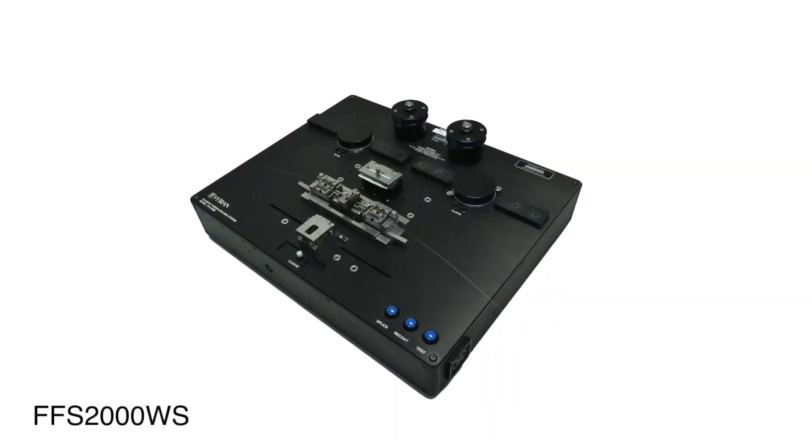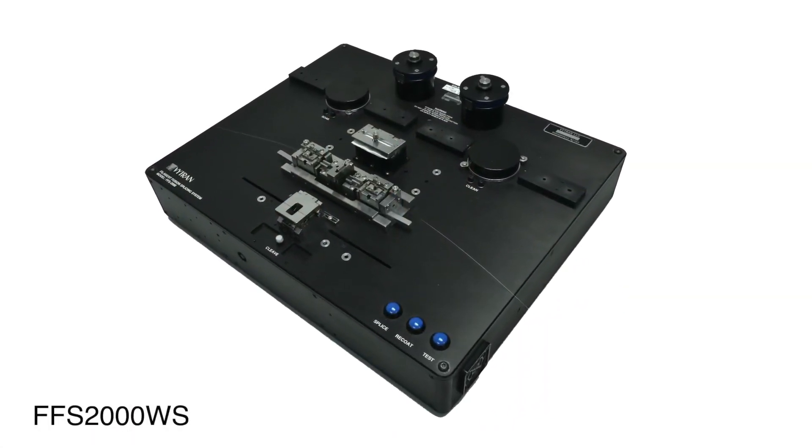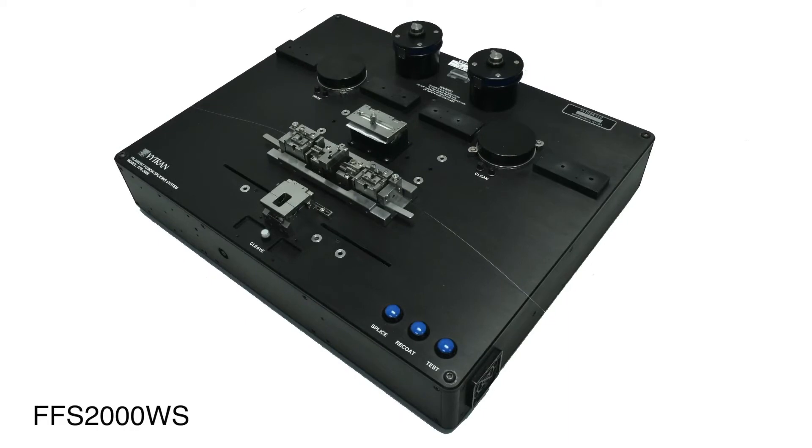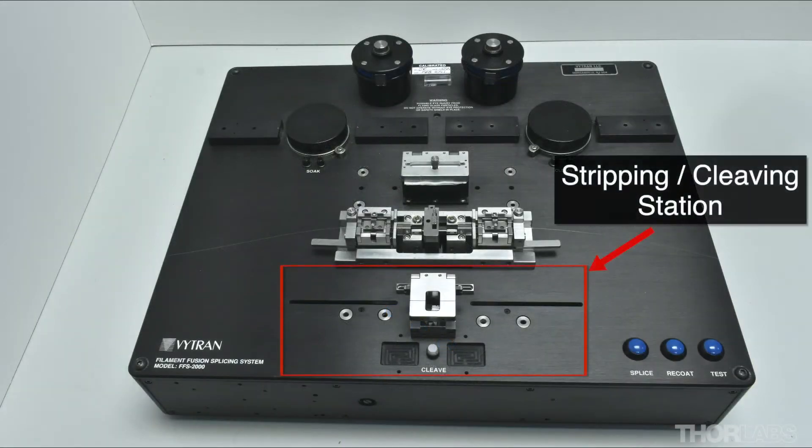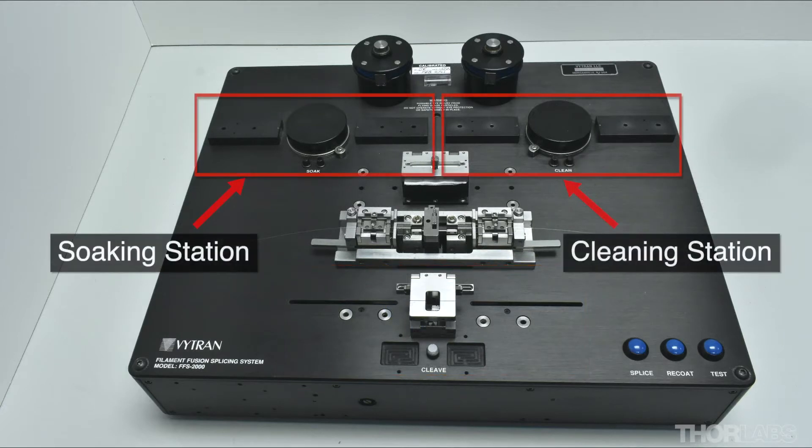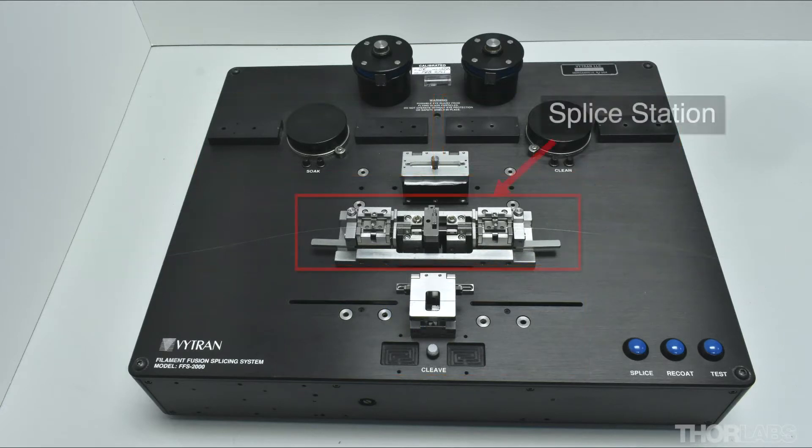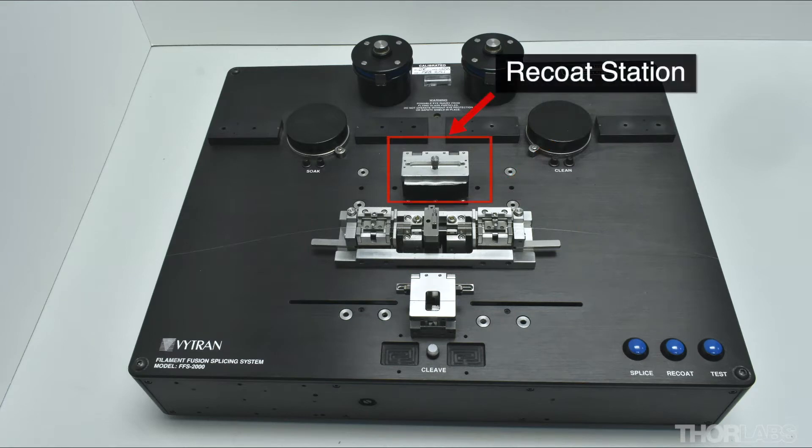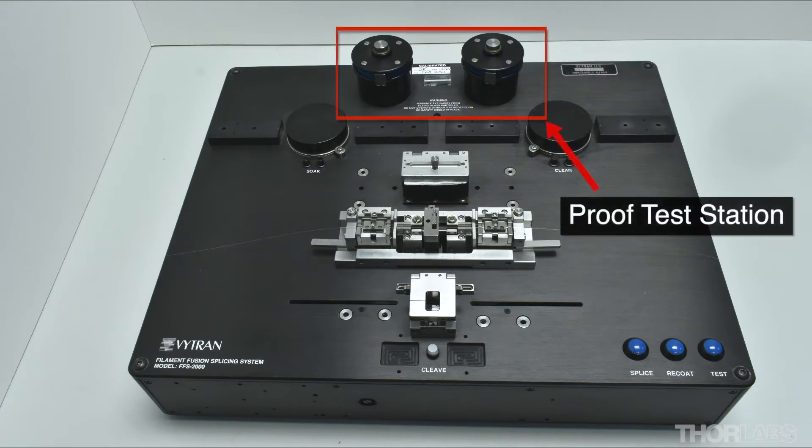The FFS2000 is a fusion splicing workstation which is capable of performing all steps of the splice process: strip, cleave, clean, splice, recoat and proof test.